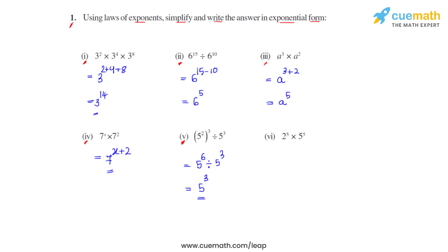The sixth part uses a different law of exponents. Here we have the same powers but different bases, and the two numbers are in multiplication. We keep the same power but multiply the bases: 2 times 5, giving us 10 raised to 5.